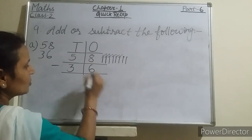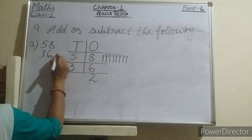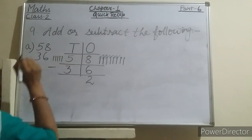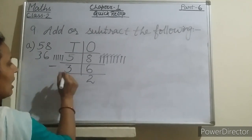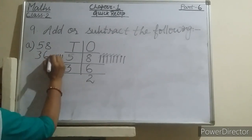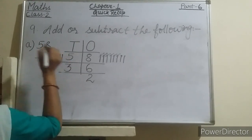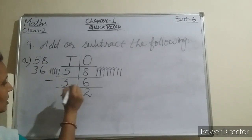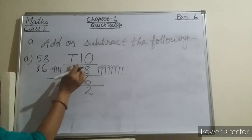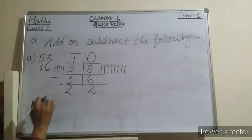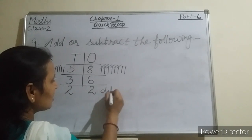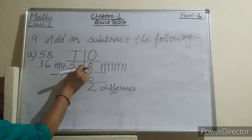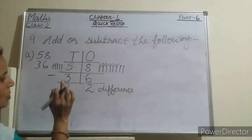Again, for 5 tens, I have to draw 5 matchsticks — 1, 2, 3, 4, 5. And how many matchsticks I have to remove? I have to remove 3 matchsticks — 1, 2, 3. How many matchsticks are left? 2. So 58 minus 36 is equal to 22. The difference is 22. We have subtracted the smaller number from the bigger number and our answer is 22.